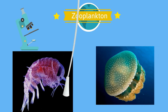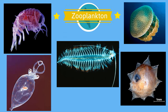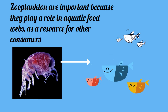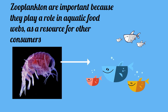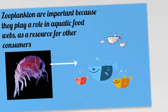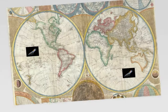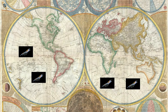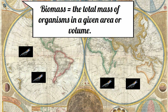Zooplankton are important because they play a role in the aquatic food webs, and they are a resource for other consumers such as fish and even some whales. In fact, the Antarctic krill is among the species with the largest biomass in the world. Zooplankton eat floating bacteria, phytoplankton, and even other zooplankton.